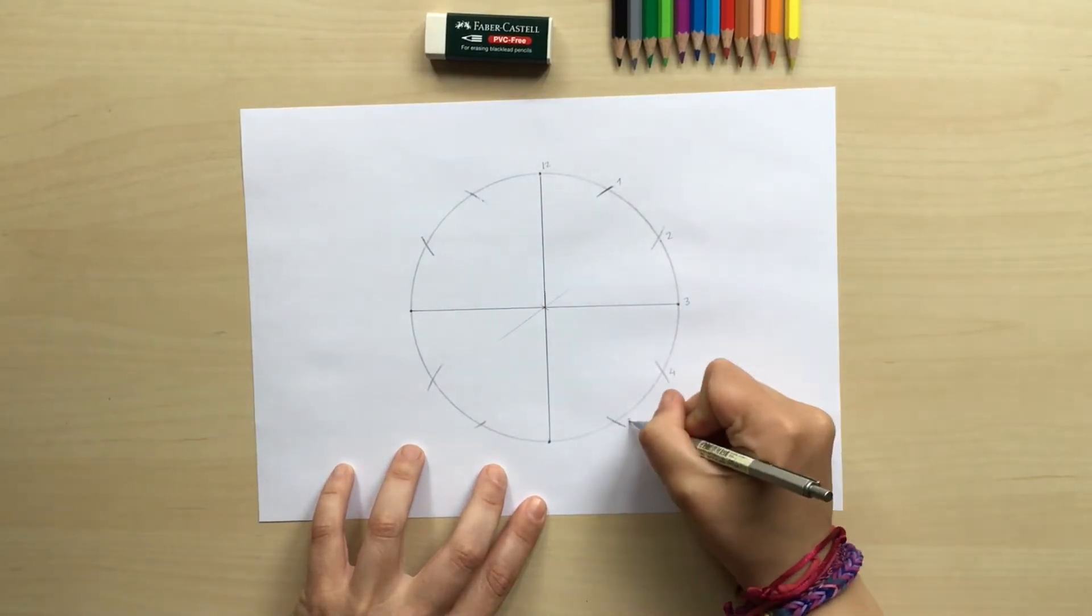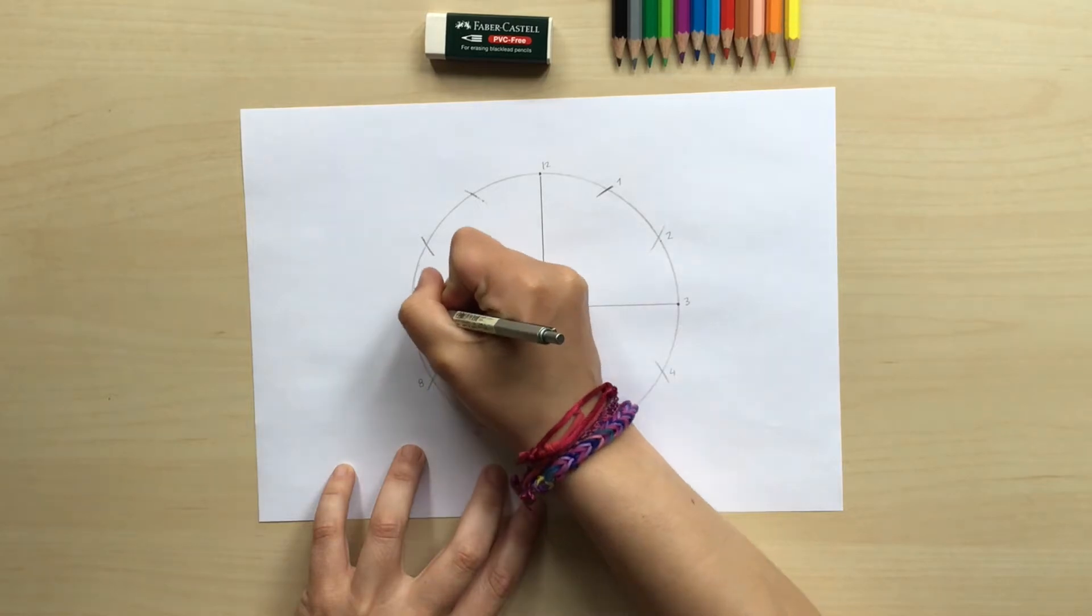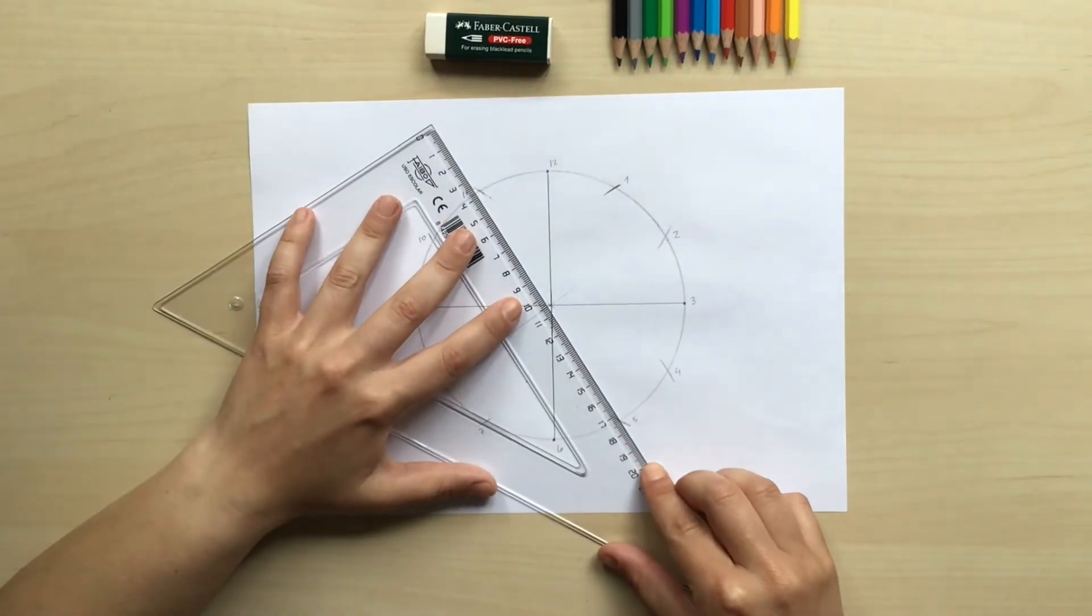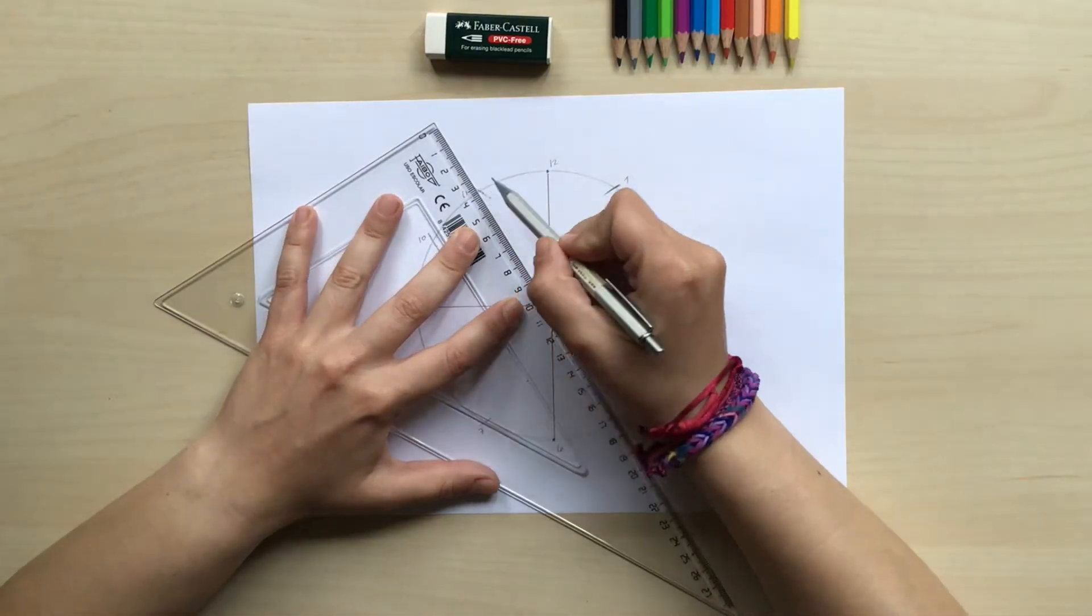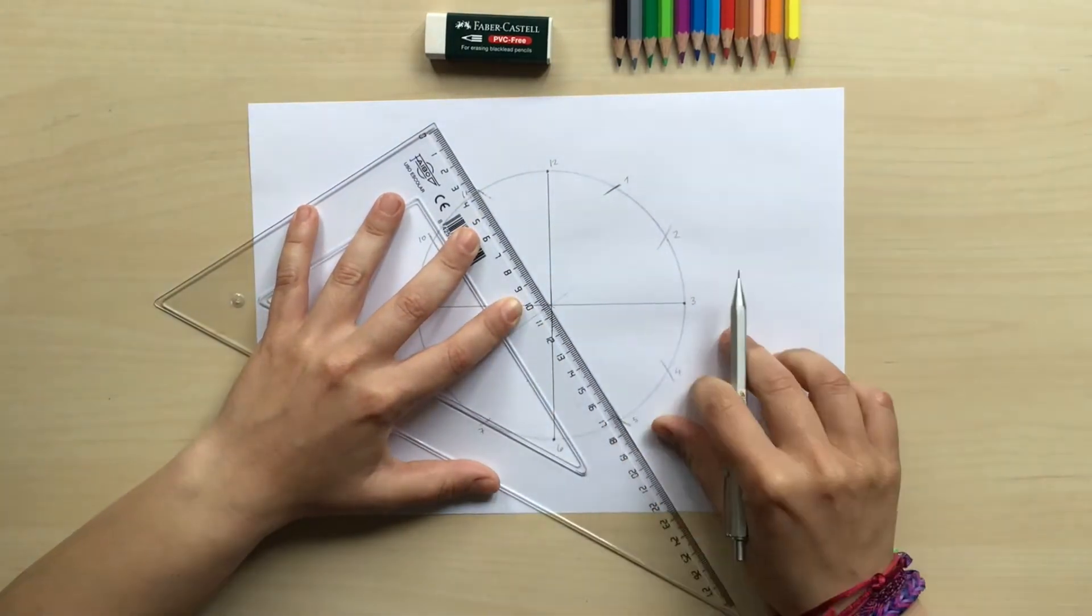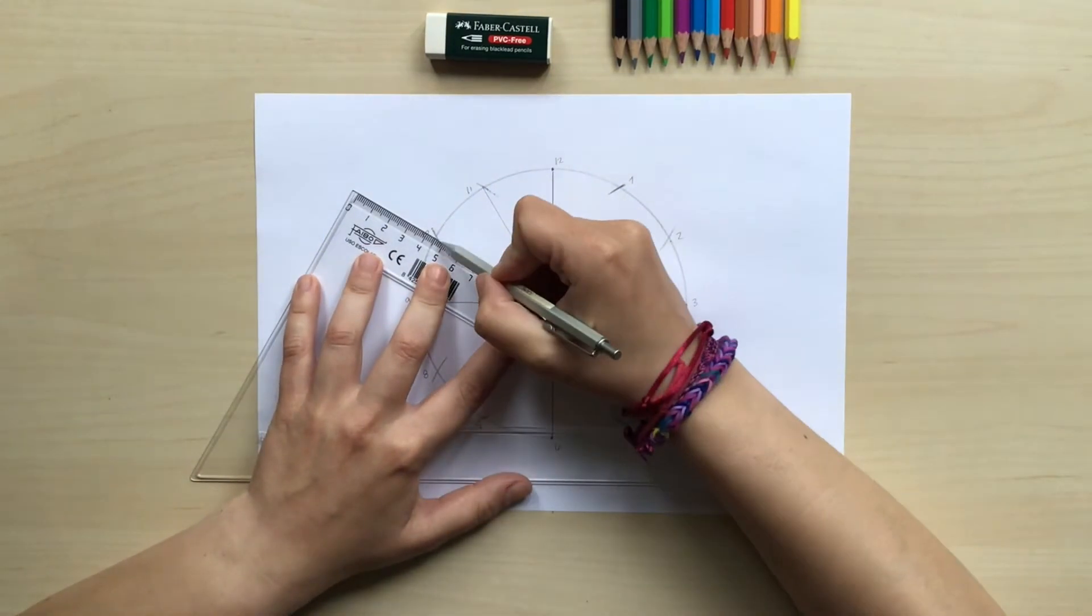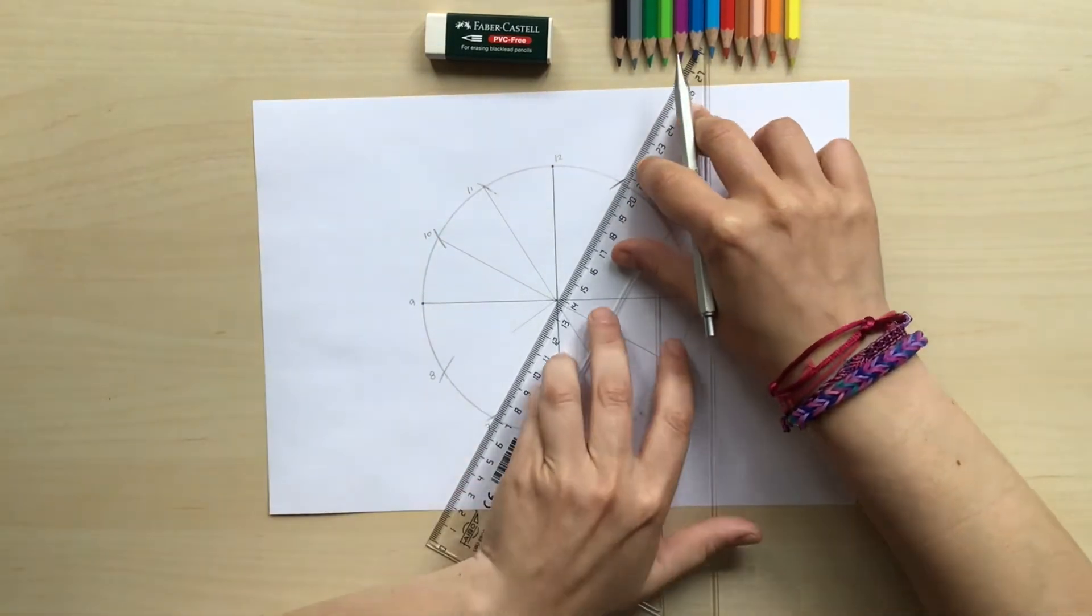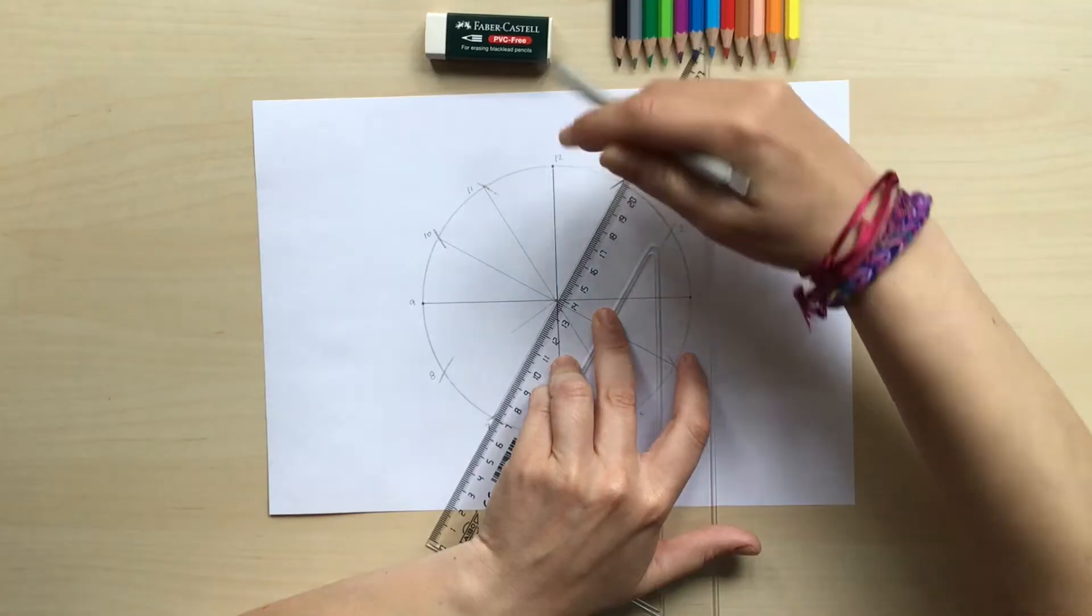I'm gonna go ahead and write the hours from 1 to 12 and now we are gonna match those points. I'm gonna make a line from 11 to 5, from 10 to 4, and then from 7 to 1 and 8 to 2.